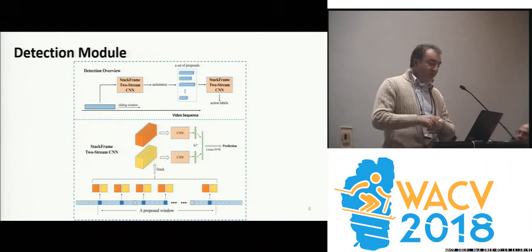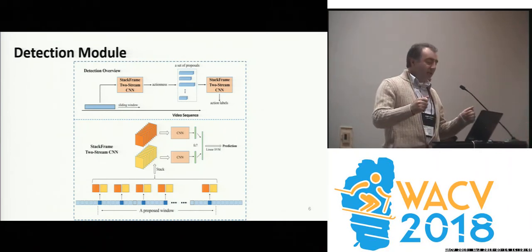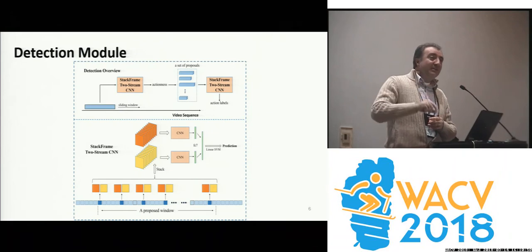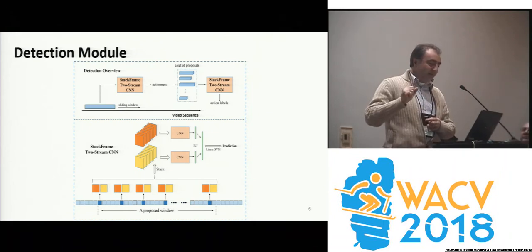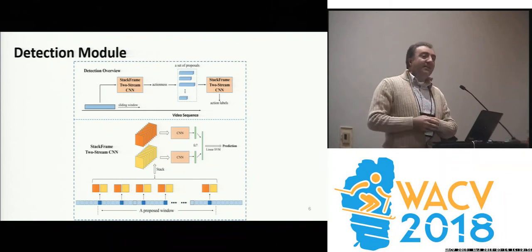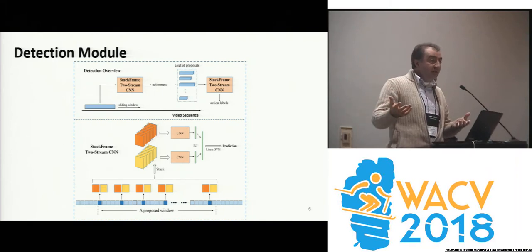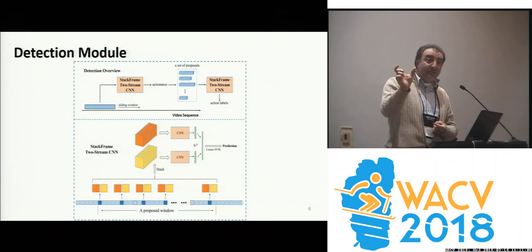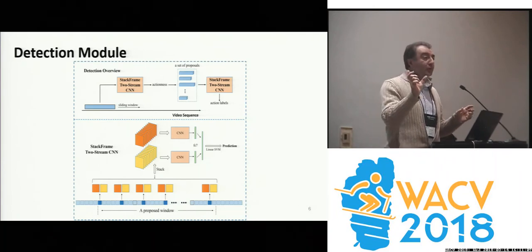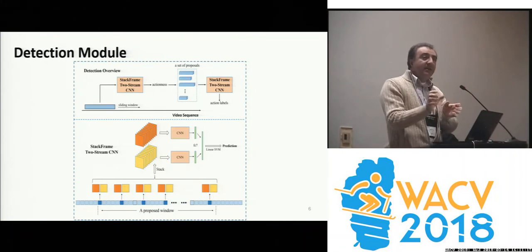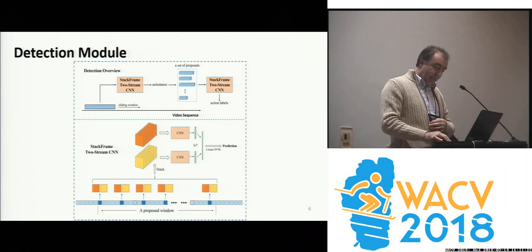The detection module — the instance detection module — takes the video with a temporal window of images going into a two-stream CNN. We get features, combine them, and use a linear SVM for prediction. We do this twice: once to remove the background, which we found works better, and a second time to actually label. The first pass also generates proposals — we find instances, remove duplicates using non-maximum suppression and other tricks.